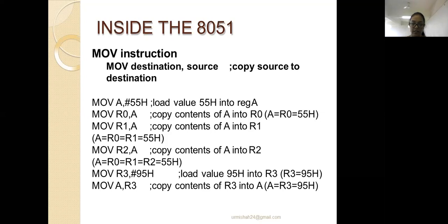Hexadecimal is base-16 format and includes numbers 0 to 9 and alphabets A to F. Whenever you are mentioning any immediate data, you have to include the hash symbol first, then your data value. In the instruction MOV R0, A — here A is the source register and R0 is the destination register, meaning you move the data from register A to register R0.